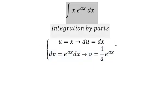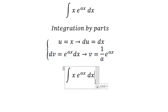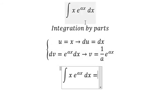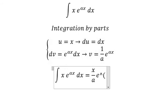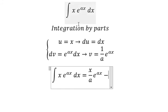Now we have u times v minus the integral of v times du.